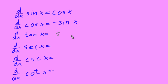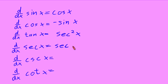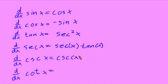Now I'll fill in the rest of the table. The derivative of tangent of x equals secant squared of x. The derivative of secant of x equals secant of x times tangent of x. The derivative of cosecant of x equals negative cosecant x times cotangent of x. And the derivative of cotangent of x equals negative cosecant squared of x.